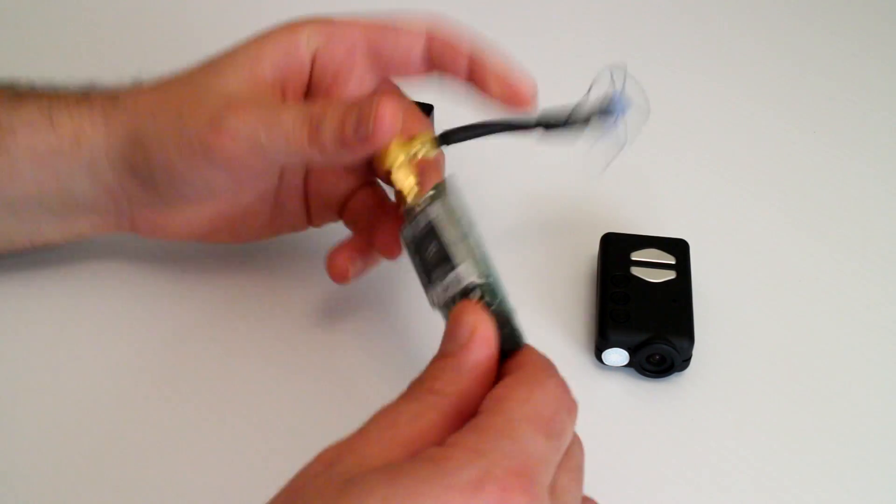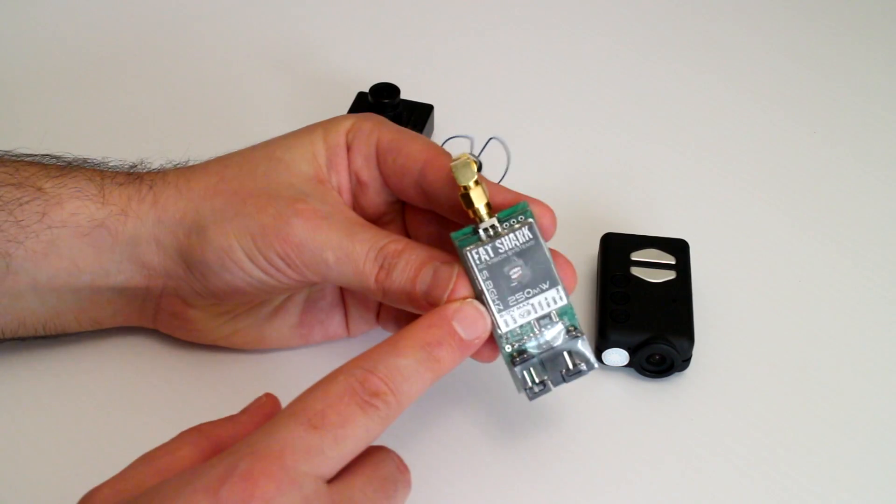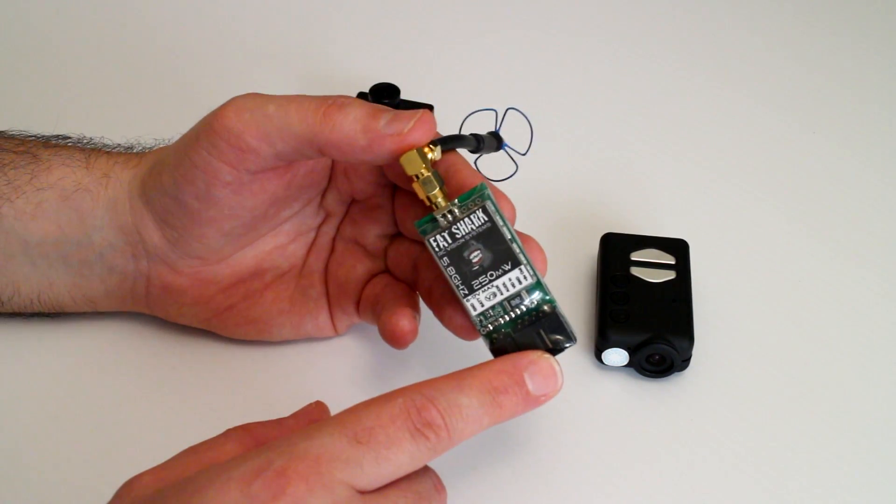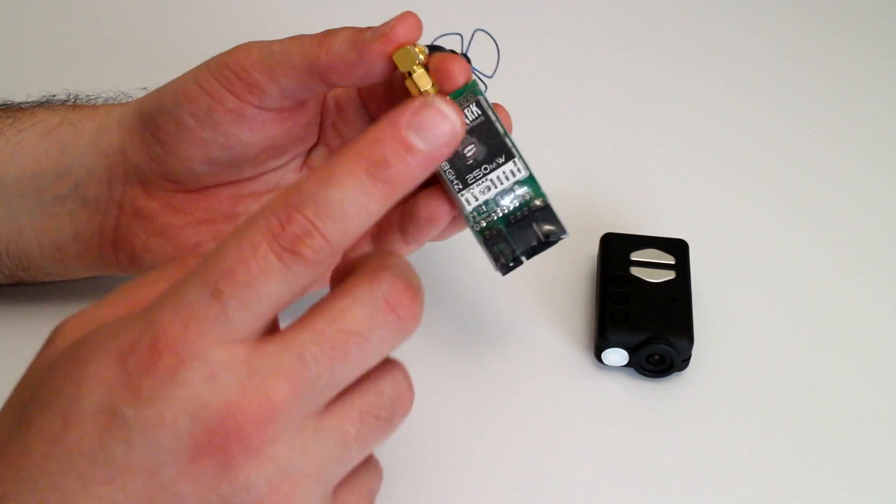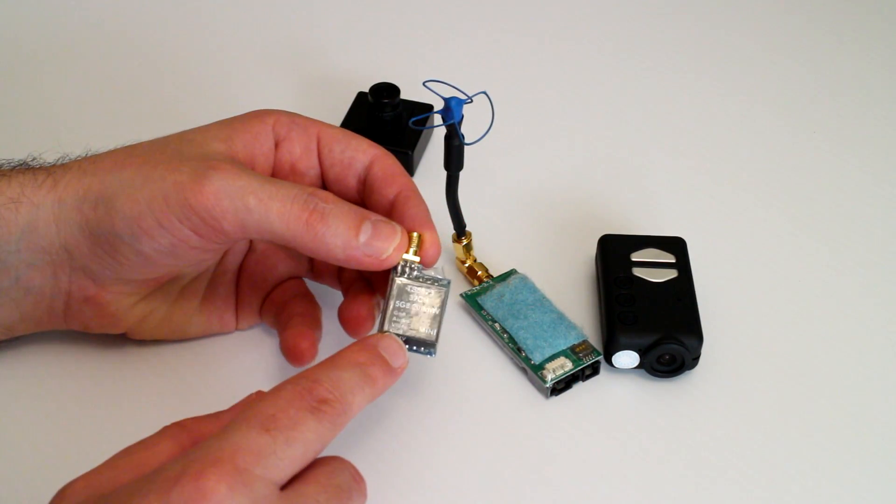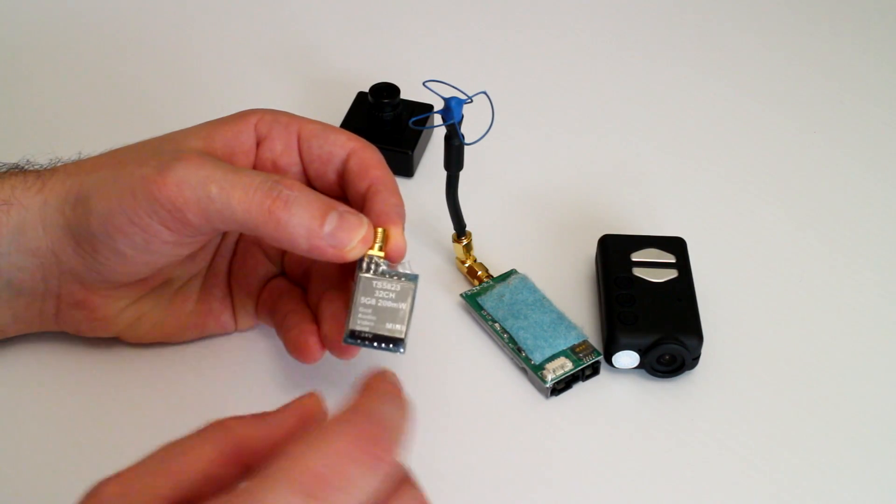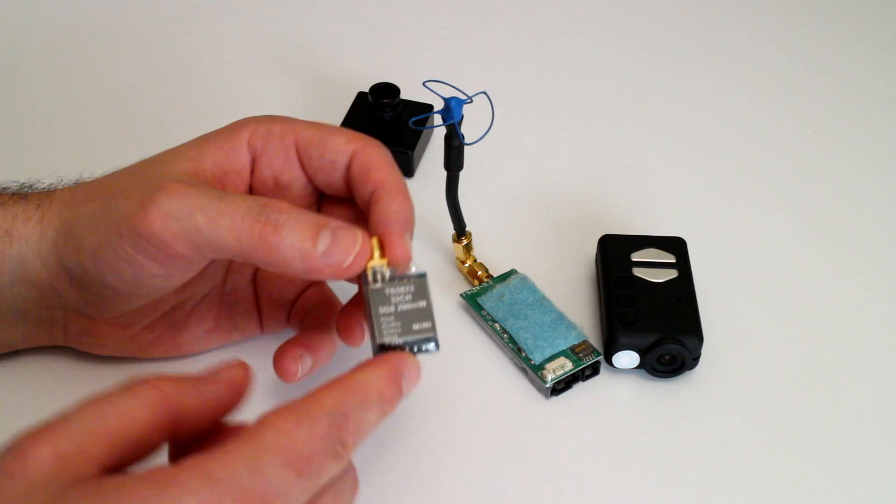For the video transmitter, I have the FatShark 250 milliwatt 5.8 gigahertz transmitter. This transmitter came with the FatShark video goggle kit. I originally changed from this transmitter to one of the newer smaller ones, the TS5823 5.8 gigahertz 200 milliwatt 32 channel transmitter to save about 10 grams again.